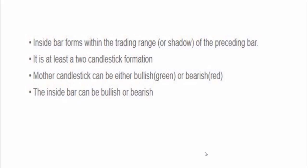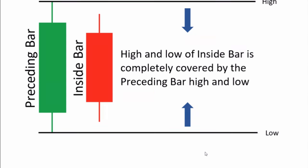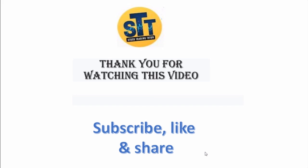Bullish is represented as a green color and bearish as red, as discussed in previous parts. The inside bar can be bullish or bearish. As shown in the picture, the high and the low of the inside bar are completely covered by the preceding bar.